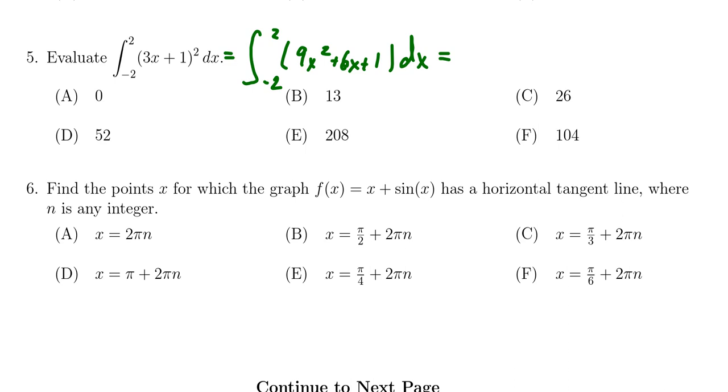If we calculate the antiderivative using the antiderivative version of the power rule, we end up with 3x³ + 3x² + x, and we're going to evaluate this from -2 to 2.